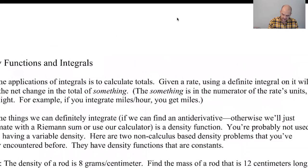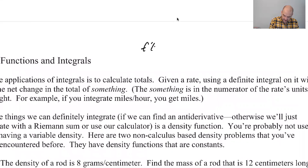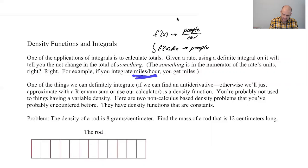So if you have f prime of x in, I don't know, people per car, right? So if you integrate f prime of x dx, x has got to be measured in cars in this case. We're going to end up with a total of people, like how many people in all of these cars. Or if you integrate miles per hour, you just end up with miles. So when you do a definite integral of a rate, you end up with just kind of the numerator of that rate.